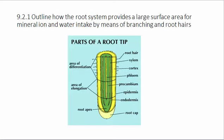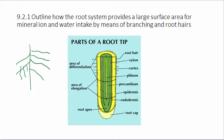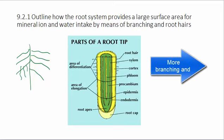The first assessment statement says outline how the root system provides a large surface area for mineral ion and water intake by means of branching and root hairs. A root doesn't usually look like just one vertical column — it has a lot of little hairs and other branches. This increases the amount of surface area, thereby increasing the amount of mineral ion and water absorption from the soil.